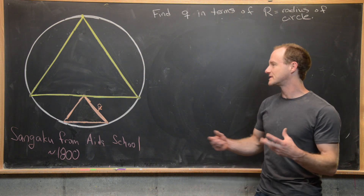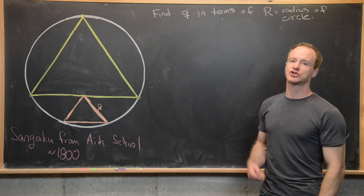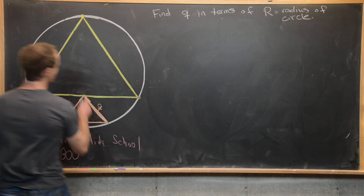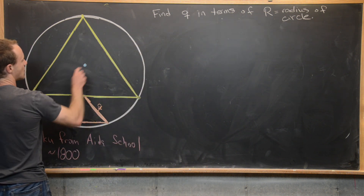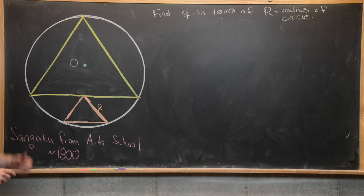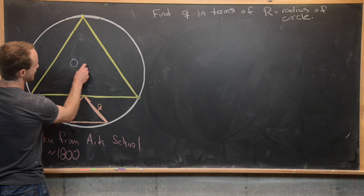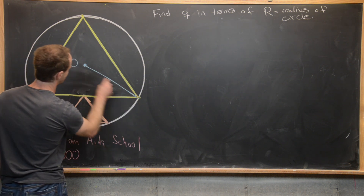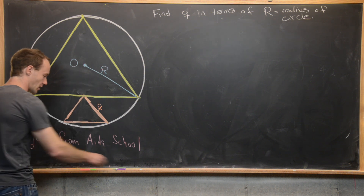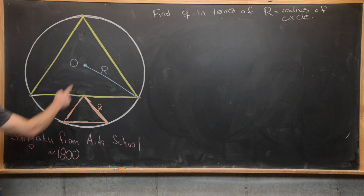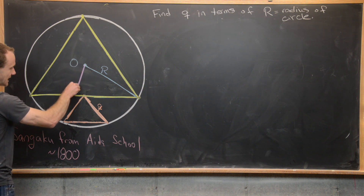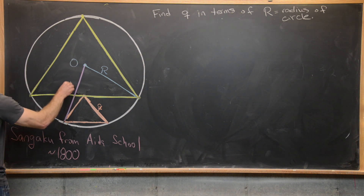Our main strategy will be to add some line segments into this picture and then use trigonometry. First, I'll place the center of the circle at point O. Then I'll draw two radii: one from O to a vertex of the larger equilateral triangle, which has length R, and one from O down to a vertex of the smaller triangle, which also has length R.